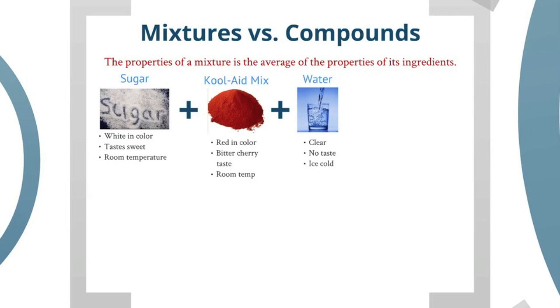We're going to mix that in with water. Water is clear, it has no taste, and let's say the water we're using is ice cold. If we mix those three ingredients together, we're going to get a substance that's red, and that redness comes from this. It's going to have a sweet cherry taste, that cherry taste comes from that mixed with that. And finally, it's going to be ice cold because this was cold. The Kool-Aid, my final product, is an average of these three ingredients. You can observe each of these ingredients inside of the final product, and that is characteristic of a mixture. You can detect physically the different substances that make it up.